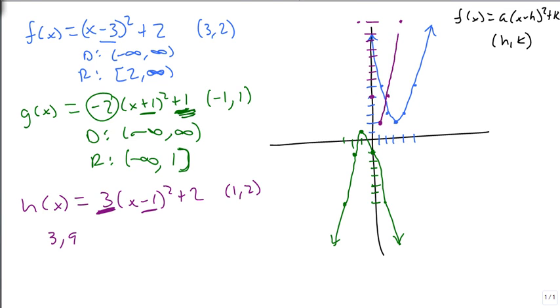And we get this really narrow graph parabola that's going up. And its domain is still minus infinity to infinity, but its range goes from 2 to infinity because it's going up. And that's how we combine all these. And this is how we graph by transformation.